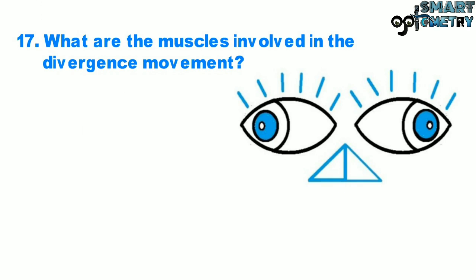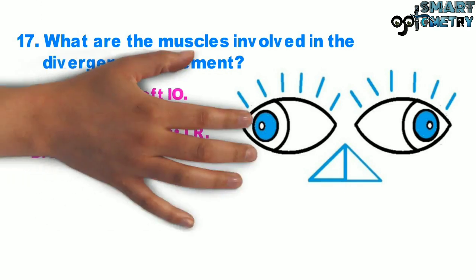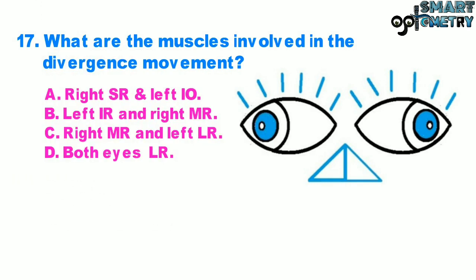Question 17. What are the muscles involved in the divergence movement? A. Right superior rectus and left inferior oblique, B. Left inferior rectus and right medial rectus, C. Right medial rectus and left lateral rectus, D. Both eyes' lateral rectus.